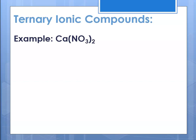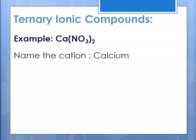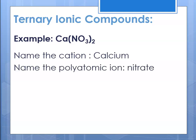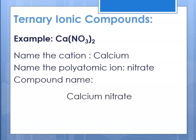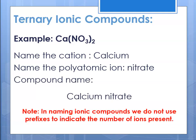Example one: Ca(NO₃)₂. Name the cation — calcium. Name the polyatomic ion — nitrate. Compound name: calcium nitrate. Note there are no prefixes. The subscript 2 is the result of needing two nitrates, each with a charge of negative one, to cancel the charge of calcium, which is plus two. So again, no prefixes.